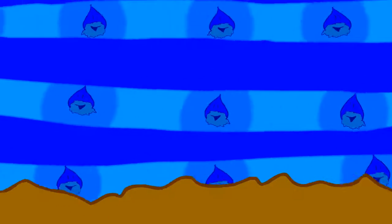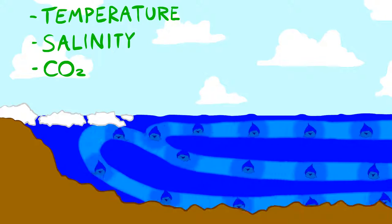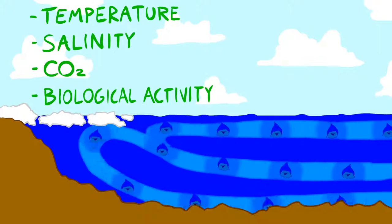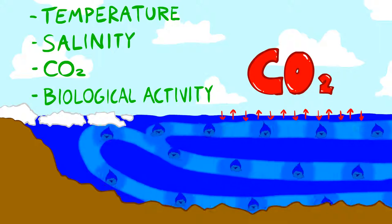When that water is exposed to CO2 at the surface, its temperature, salinity, carbon dioxide, and biological activity make an enormous difference in how much carbon dioxide will be exchanged between atmosphere and ocean.